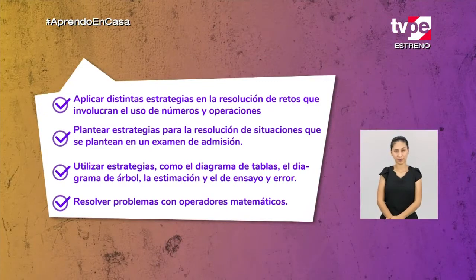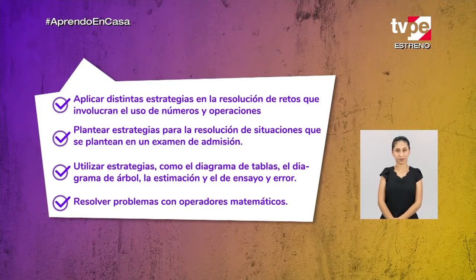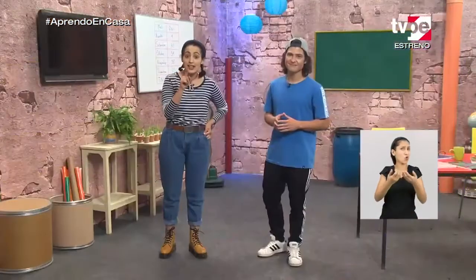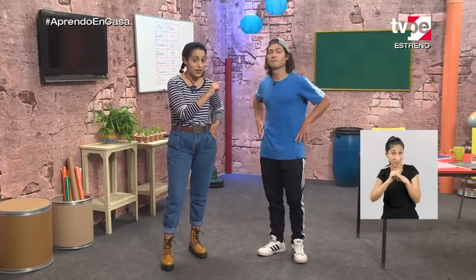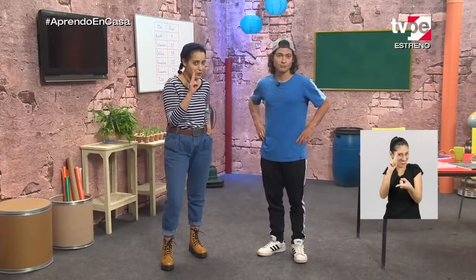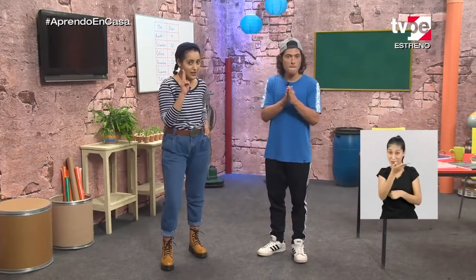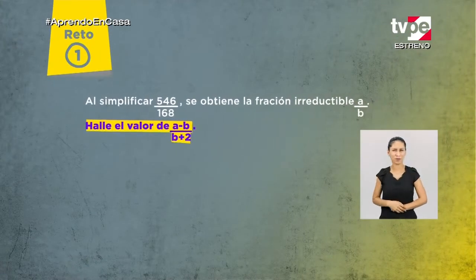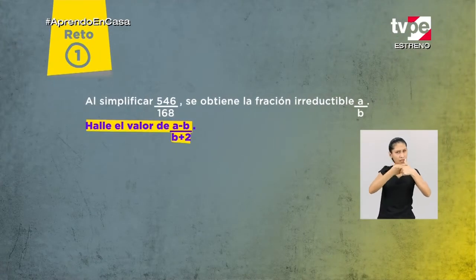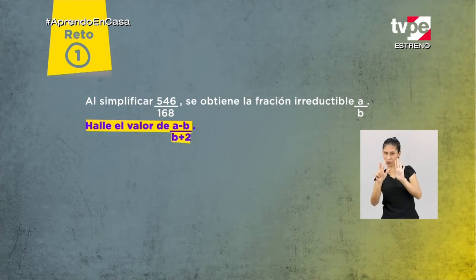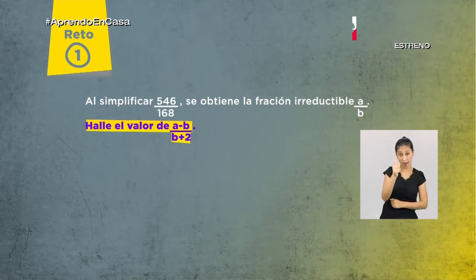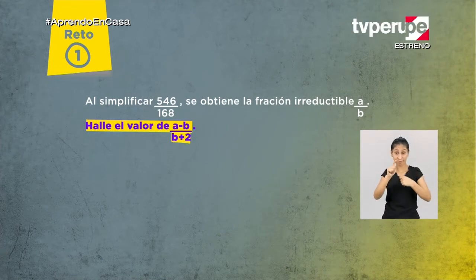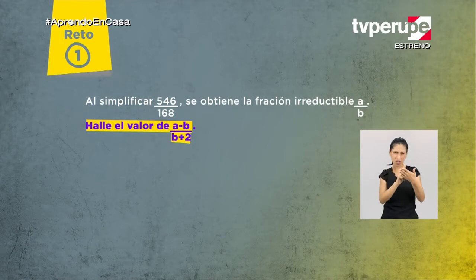Resolver problemas con operadores matemáticos. Y con el fin de que sigan practicando en sus casas, Joaquín y yo les dejamos dos retos para que los puedan resolver. Reto 1: Al simplificar 546 entre 168, se obtiene la fracción irreductible A sobre B. Halla el valor de A menos B entre B más 2.